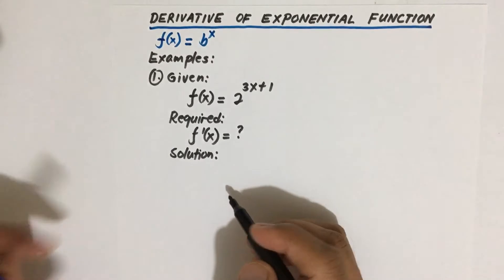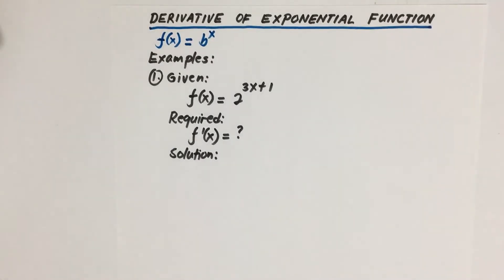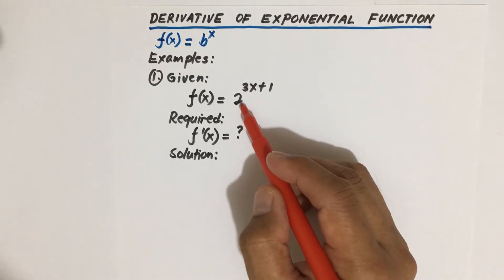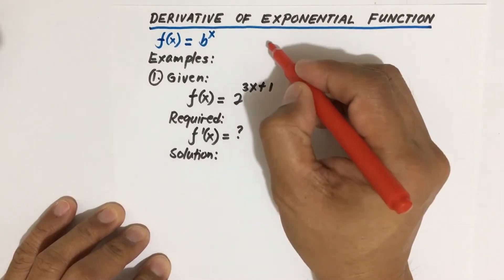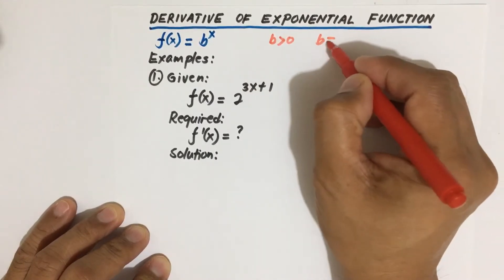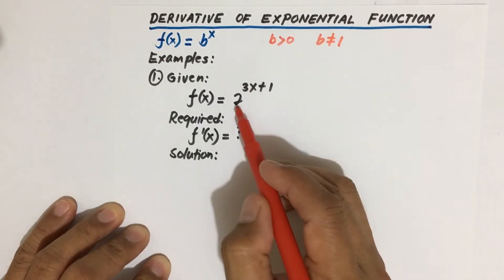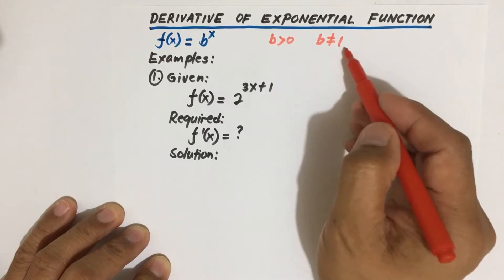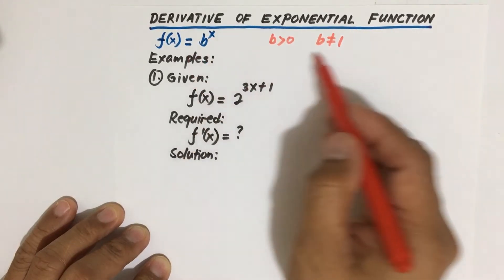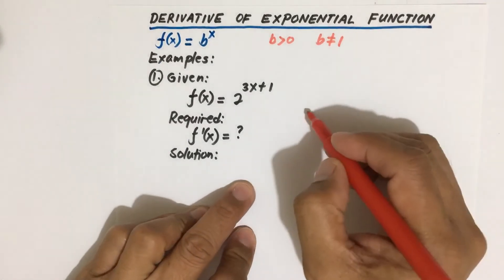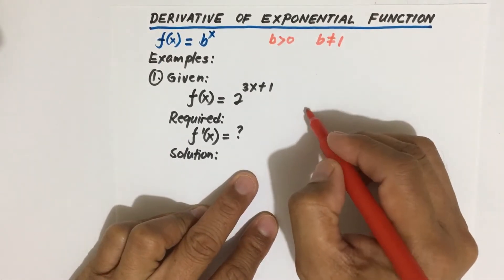For this given function class, we are going to use the formula now. The base is in the form of b, where b is any number. The condition is that b should be greater than zero and b should not be equal to 1. So the given base here is 2, so it's greater than 0 and b is not equal to 1, so the condition is satisfied.